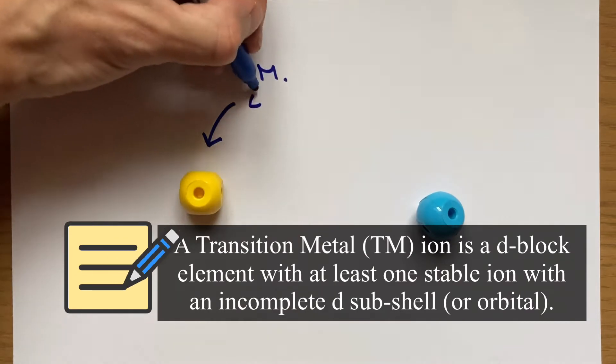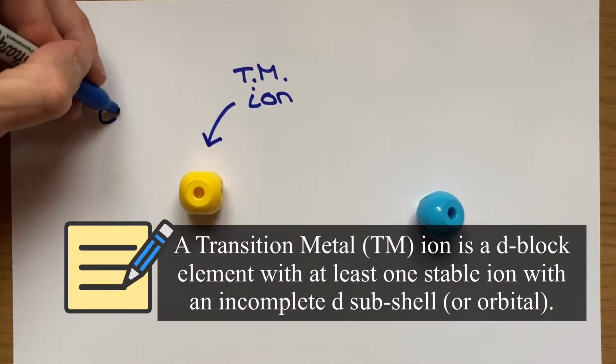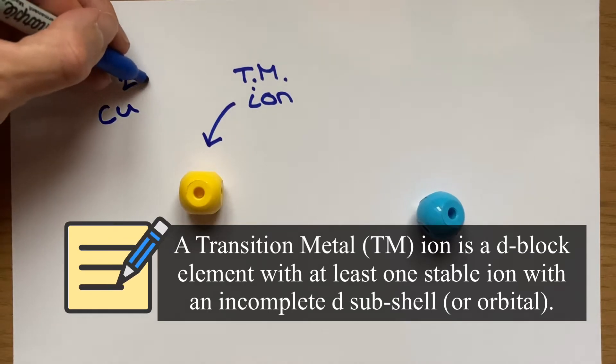We're going to start off with what a transition metal ion is and it's a d-block element with at least one stable ion with an incomplete d-sub-shell or orbital.